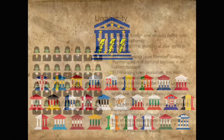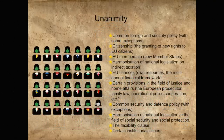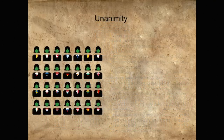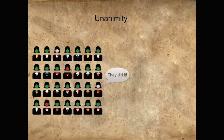In practice, however, the Council tries to reach unanimity not only on these subjects, but also on subjects that only require qualified majority. As a result, there tend to be very few votes against or abstentions. So if your National Minister says Brussels decided, remember, they were there and they had a vote.